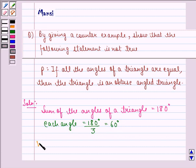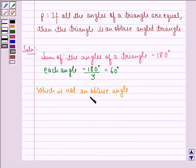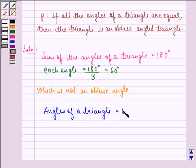Which is not an obtuse angle, and therefore the triangle is not obtuse angled. So the counter example is that angles of a triangle equal to 60 degrees each, for which the statement is not true.